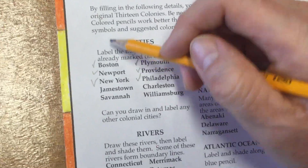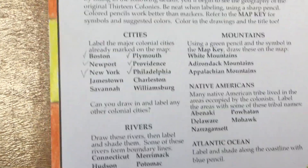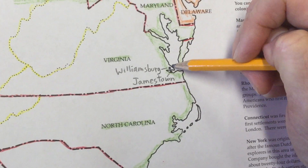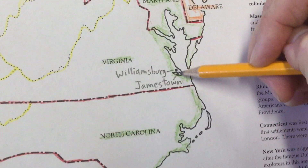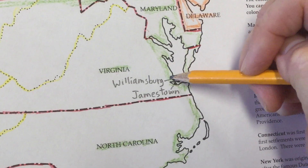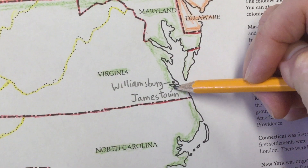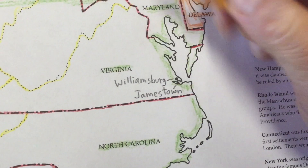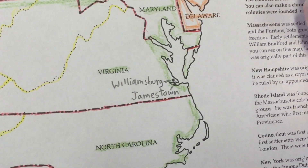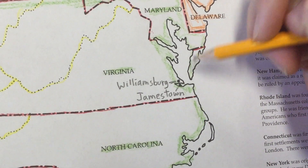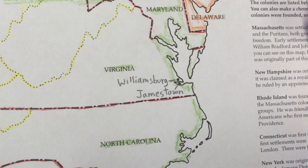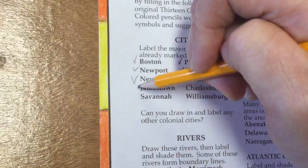Let's do Williamsburg — that dot right there in Virginia. There are two cities very close together: Williamsburg and Jamestown. I ended up writing Williamsburg a little far from the dot, so I added a leader line pointing to it. Same thing with Jamestown — I put a little line pointing to its dot. Let's check those two off.